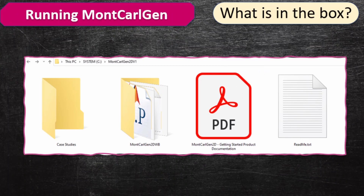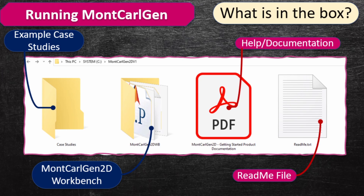Basically, you'll find these files. The first thing you'll find is a list of case studies — examples to help you understand what we're trying to do. These case studies will be from unidirectional composites, particulate composites, and other kinds of systems. Then we'll also have the main multi-calgen 2D workbench. There is a documentation file that helps you understand in detail what's going on with the model, and then there's a readme text file with licensing information. Those are the four things you'll get when you get hold of this code.